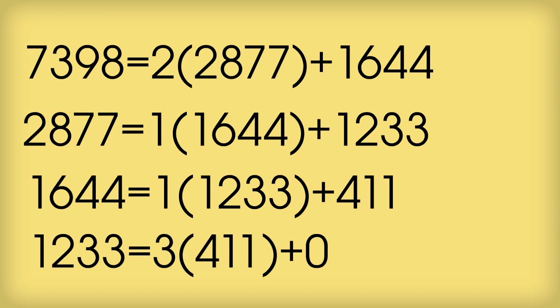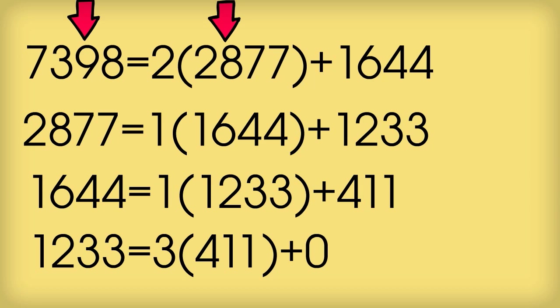Let's do it again. 1233 equals 3 times 411 plus 0. If you think about it, as the remainders get smaller and smaller, eventually we must get to 0. So this is telling us now that the GCD of 7398 and 2877 is the same as the GCD of 411 and 0. And the GCD of 411 and 0 is just 411.